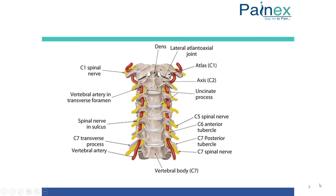These are the cervical vertebrae — C7 and C6. If we have to perform a stellate ganglion block, we can inject the drug at C6 or C7. C6 is preferred. Why? Because you can see the vertebral artery is not exposed at C6 level — it enters into the foramen.